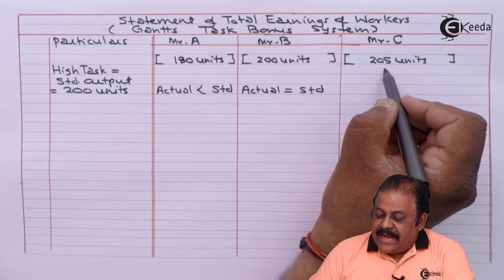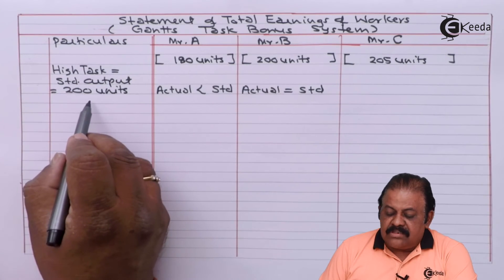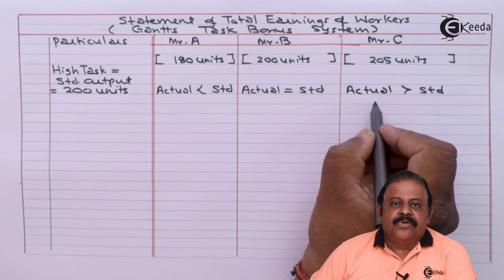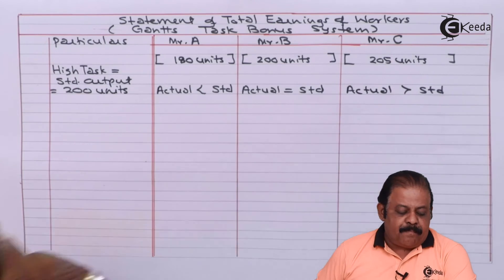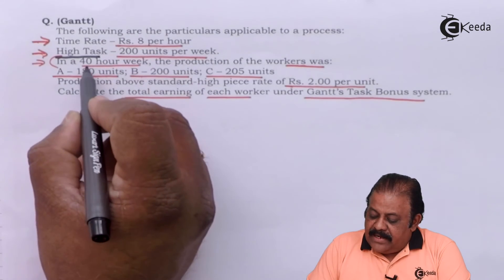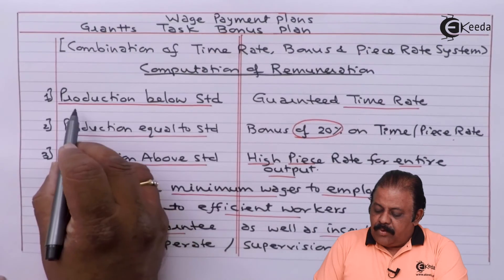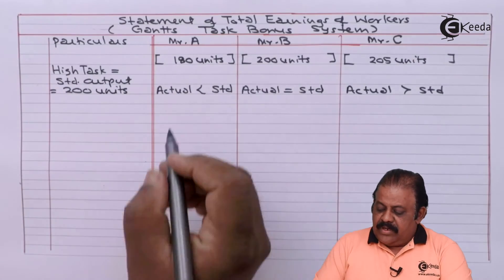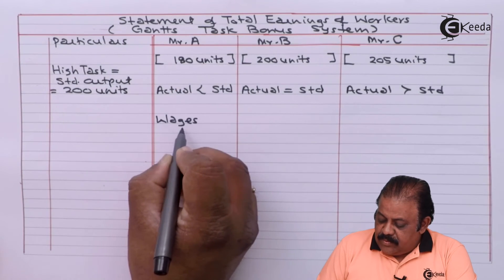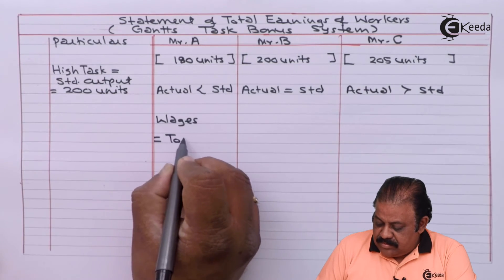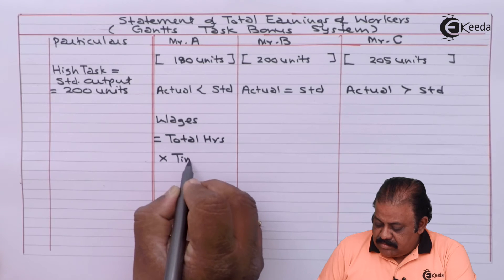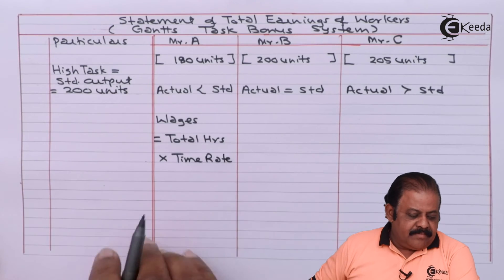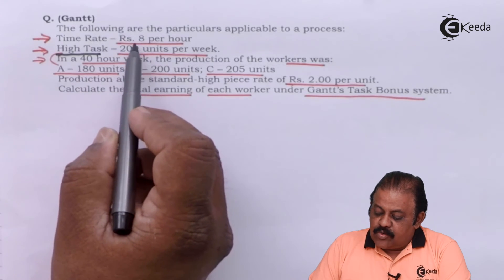In case of Mr. C, actual is 205 units and high task standard output is 200 units — so actual is greater than standard. In case of A, since output is below standard, wages paid will be total hours multiplied by the guaranteed time rate: 40 hours × rupees 8 per hour = rupees 320.